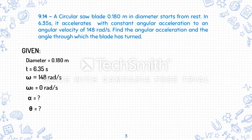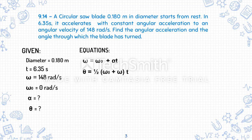Before solving, we first need to determine our equations. The equation for angular velocity is: angular velocity equals initial angular velocity plus alpha times time. And for our angle theta, we use: theta equals one-half times the sum of initial angular velocity plus final angular velocity, times time.